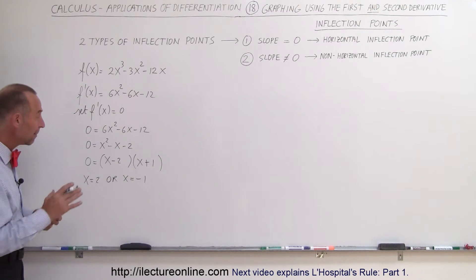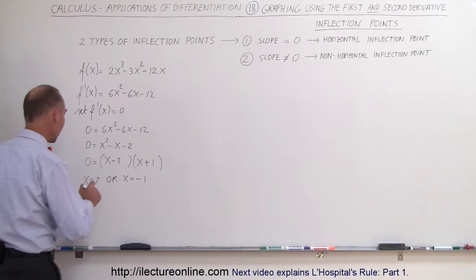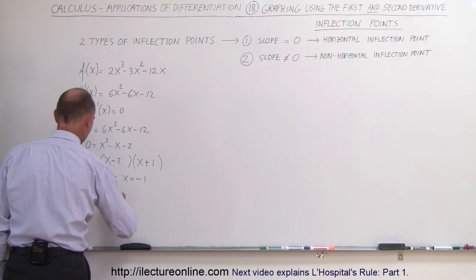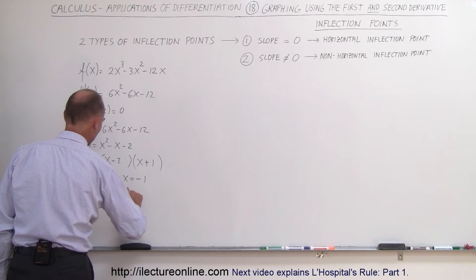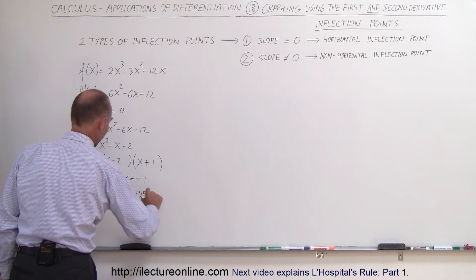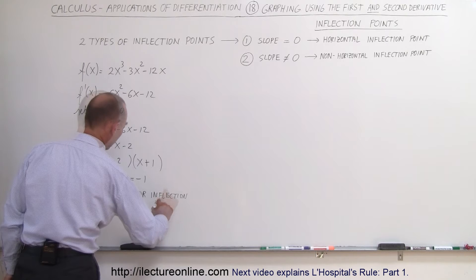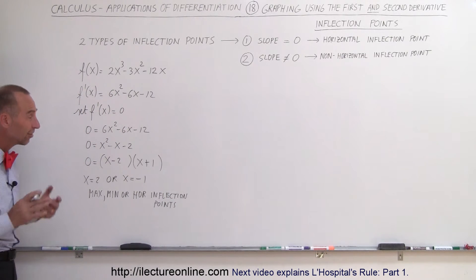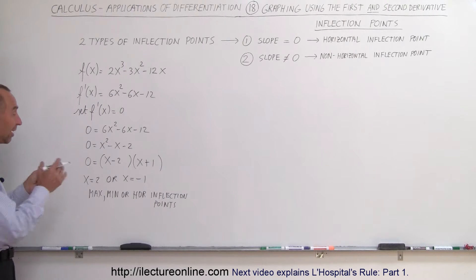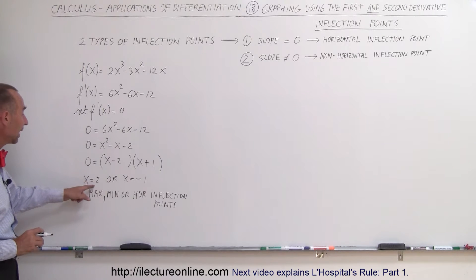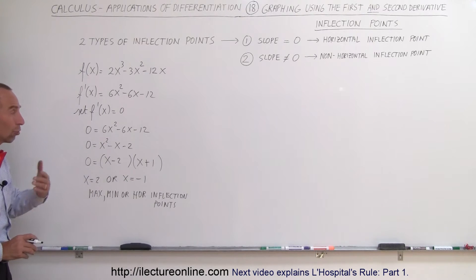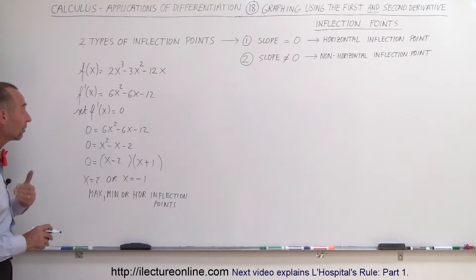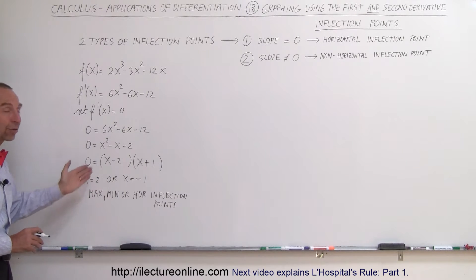Now, these are either maximum, minimum, or horizontal inflection points — max, min, or horizontal inflection points. We don't know yet which one, because we now have to take the second derivative and see if we find the same values there. If we find any one of these two values as a solution when setting the second derivative equal to zero, then we're dealing with inflection points. If not, these are max or min.